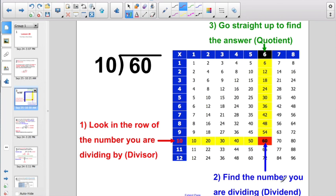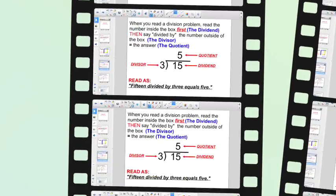Step 2, find the number you are dividing. 60 is the number we are dividing, and then step number 3 goes straight up to find the answer, otherwise known as the quotient, and there it is. 60 divided by 10 will give you 6.